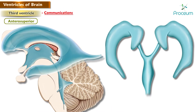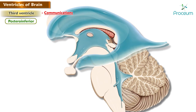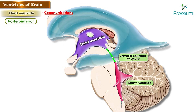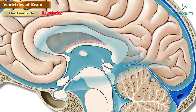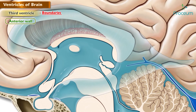Communications: anteriorly and superiorly on each side, the third ventricle communicates with the lateral ventricle through the interventricular foramen of Monroe. Posteriorly and inferiorly, it communicates with the fourth ventricle through the cerebral aqueduct of Sylvius.